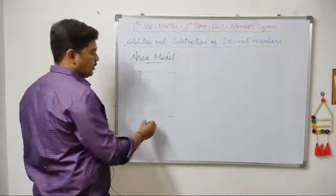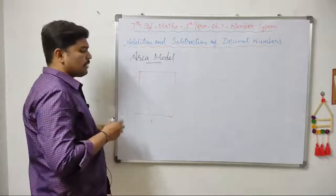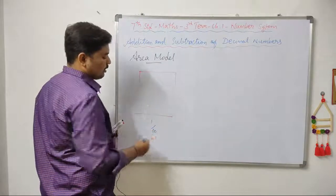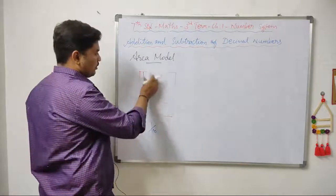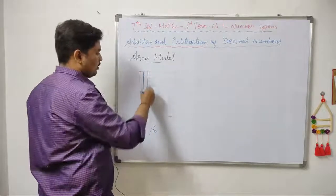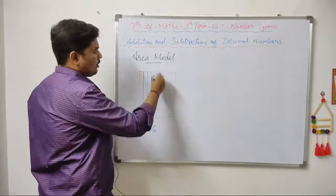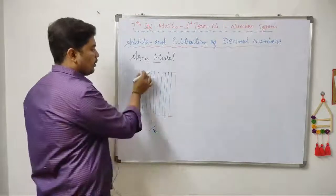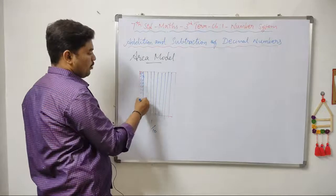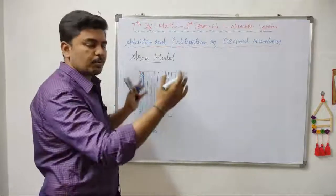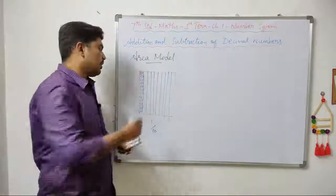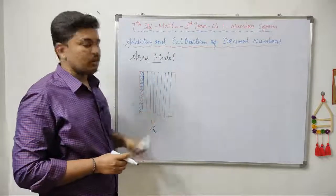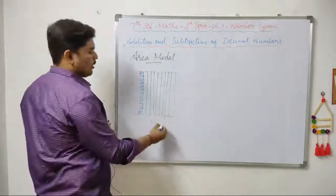We will consider the whole as a square. The square is divided into 10 parts: 1, 2, 3, 4, 5, 6, 7, 8, 9, 10. In this area, 1 by 10 of the square. The whole square is 1 unit. This part is 1 by 10 of the square. So this is 1 by 10, which is 0.1.